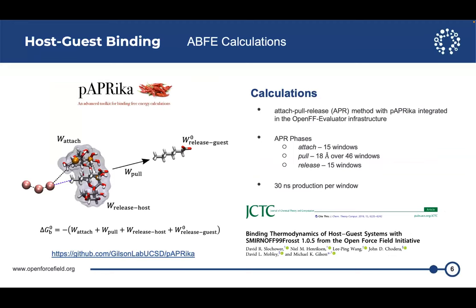Just a little background about the host guest binding. We estimated the absolute binding free energy using the attach pull release method. This method is developed in Gilson lab. As the name suggests, we attach a bunch of restraints to the host and the guests. We physically pull the guests out of the host molecule, and we estimate the free energy cost of applying those restraints. And that's done with a Python program called Paprika developed in Gilson lab. This method was used to benchmark the SMIRNOFF99Frosst force field, which is a precursor to Parsley and Sage. We show that this is a robust method to estimate the binding free energy of the host guest systems.